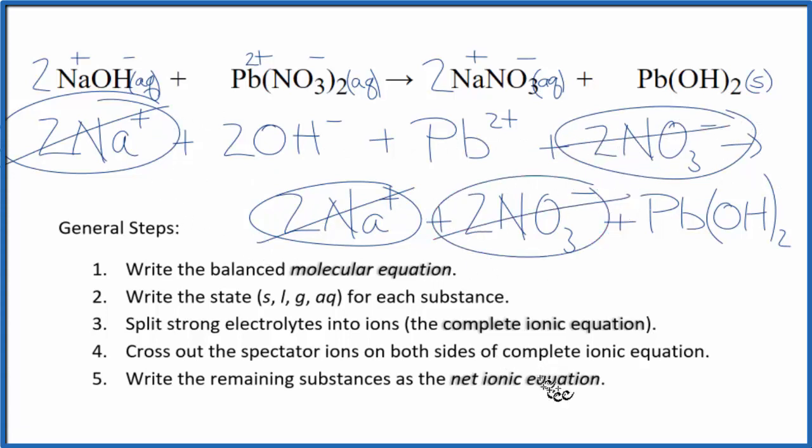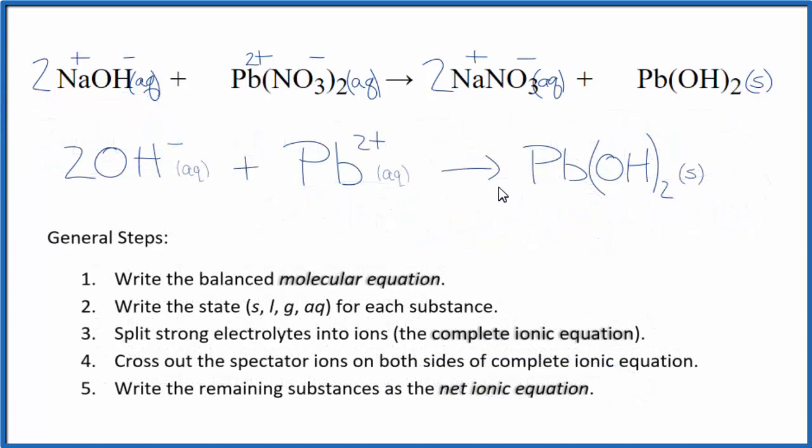What's left, that's our net ionic equation for NaOH plus Pb(NO3)2. I'll clean this up. Write the states. We'll have our net ionic equation. And this is the balanced net ionic equation for sodium hydroxide plus lead 2 nitrate.